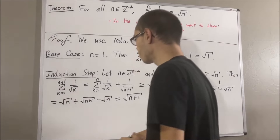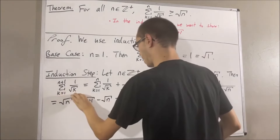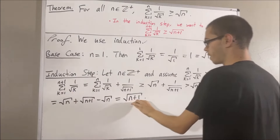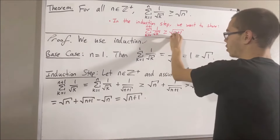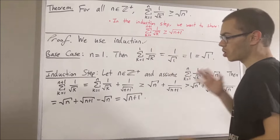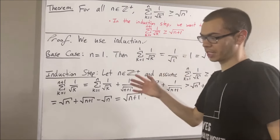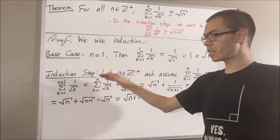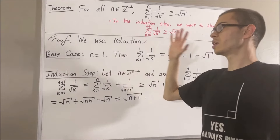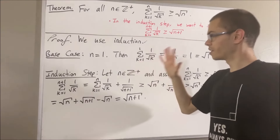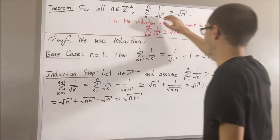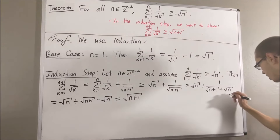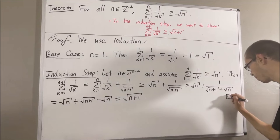And so, we've shown that this expression is greater than or equal to the square root of n plus 1, which is exactly what we wanted to show. This completes the induction step. Because we've completed both the base case and the induction step, this closes the induction. And so, we have proven that this statement is true for all positive integers n. This completes the proof.